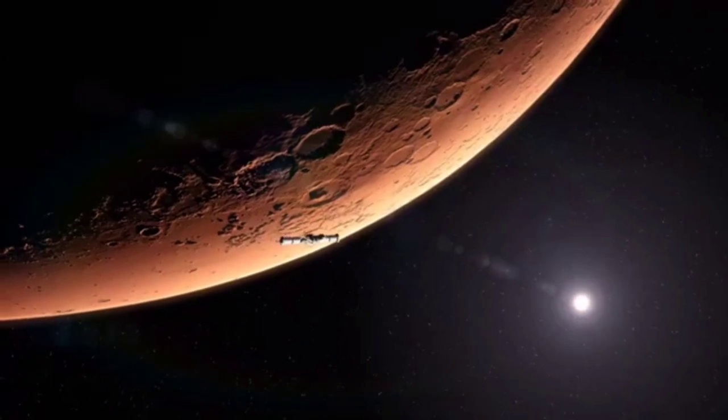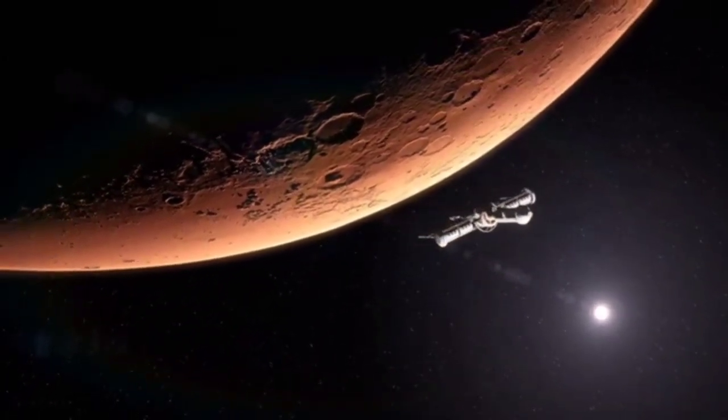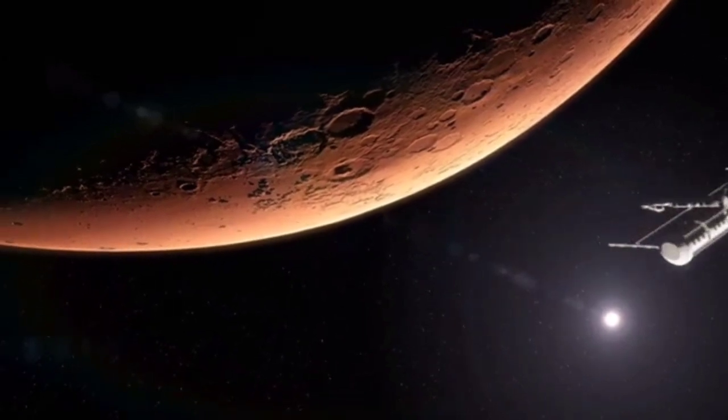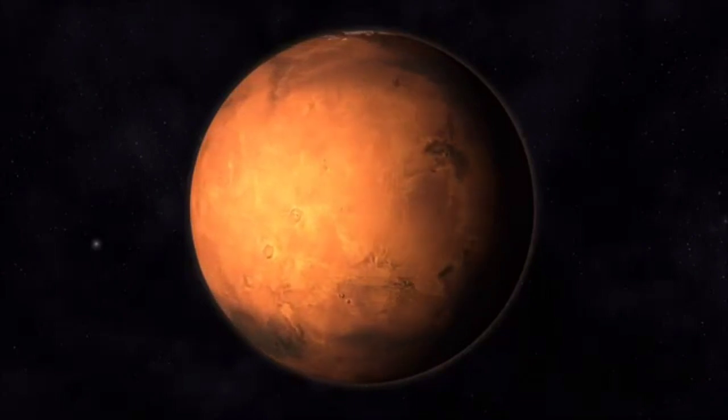The fourth planet from the sun is Mars. Mars has a huge volcano that is three times the size of Mount Everest. It is named Olympus Mons and is the tallest peak of any of the planets.